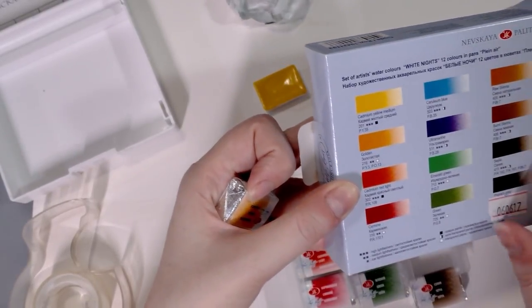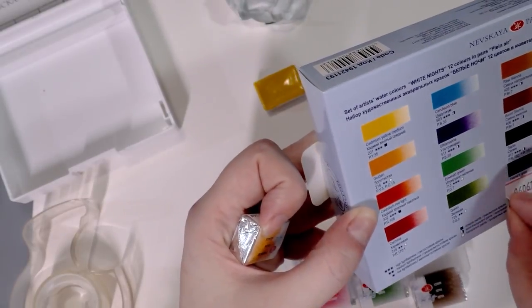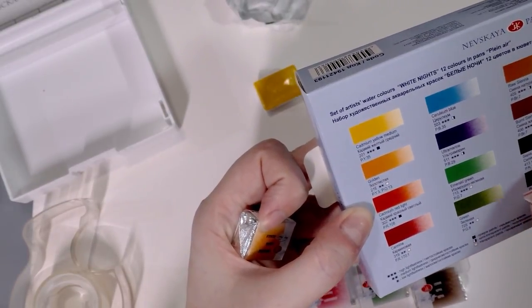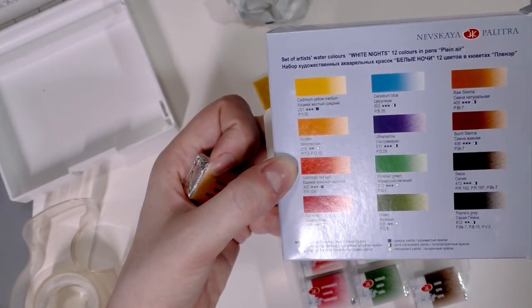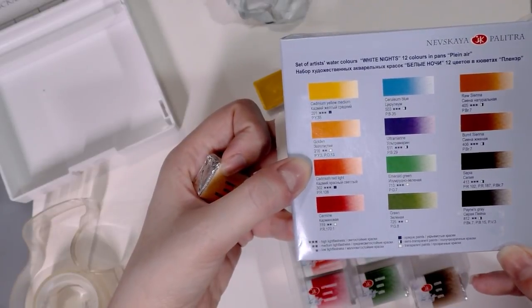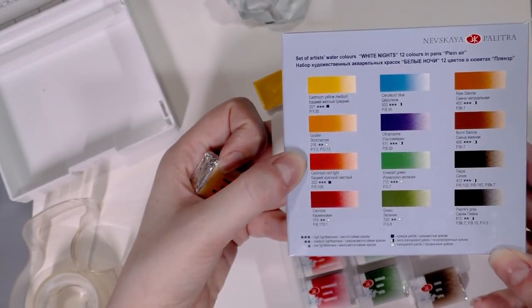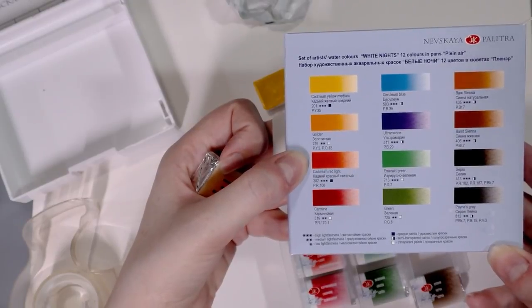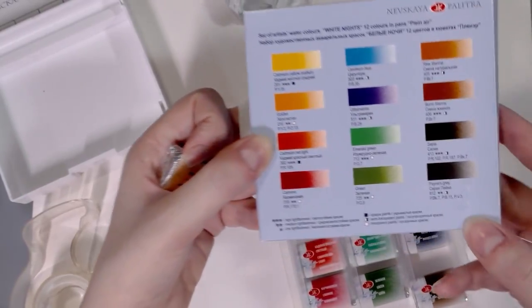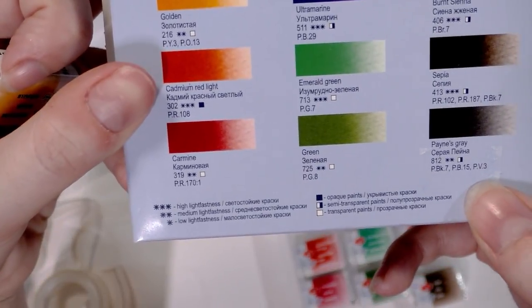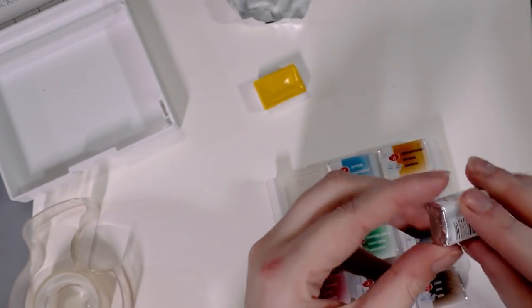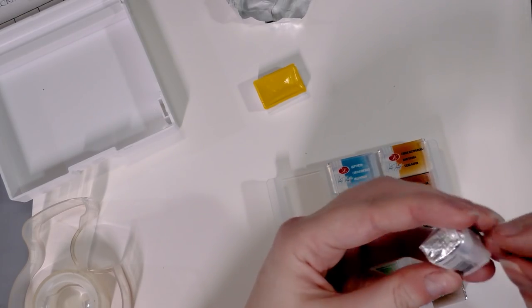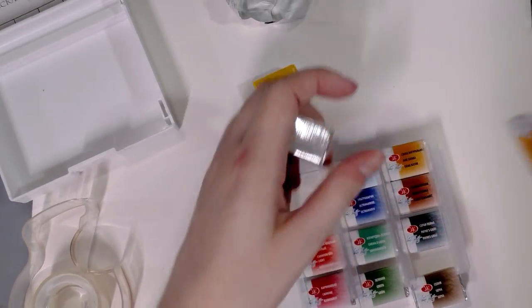There is a sticker on my paint spray. Let me see if I can remove that. So sepia is PR102, PR108, and P black 7. PR102, PR187, P black 7. Payne's gray is P black 7, PB15, PB3. I cannot talk today. I'm so sorry, guys. P black 7, PB15, PB3. And all that information is available on their website and you can find a link to that in the description below.